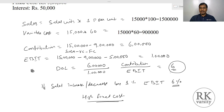To interpret the result: the higher the Degree of Operating Leverage, the higher is the operating risk for a company. And the lower the operating leverage, the lower is the operating risk for a company.